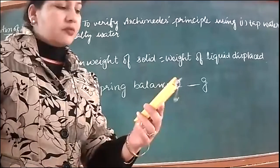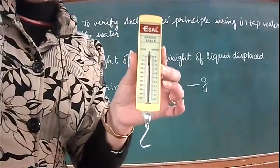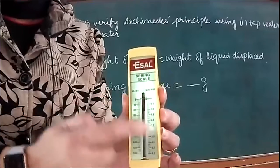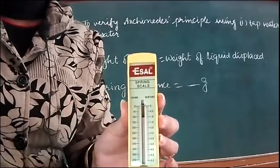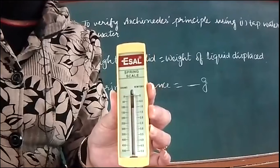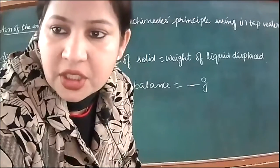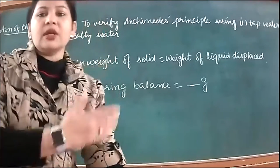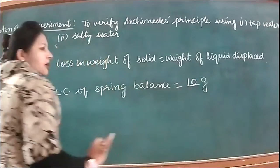First we will find the least count of the spring balance. It is used to find weight, but right now we are reading it in grams. From zero to fifty there are five small divisions, so one division equals ten grams. Therefore, the least count of the spring balance is ten grams.